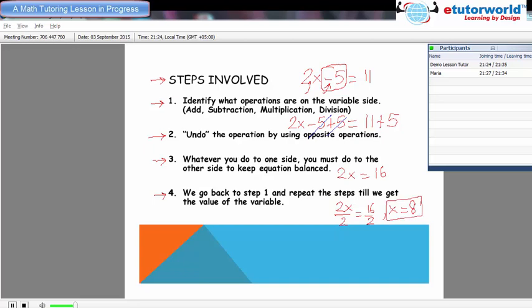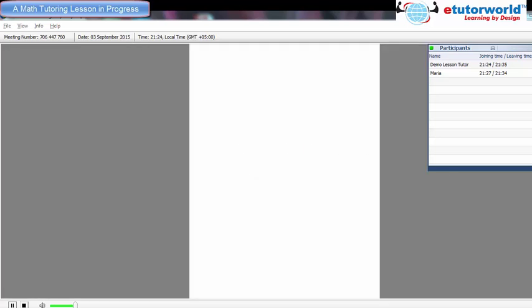Shall you try one example now? You can tell me the directions. Sure we can try. Okay, let's take an example: 9x minus 1 equals 80. So what is the first step? To identify the operation on the variable side, that is on the left side. So what are the two operations? Okay, so one operation I can see is the multiplication and the other operation I can see on the left hand side is minus 1. So we have subtraction over here.